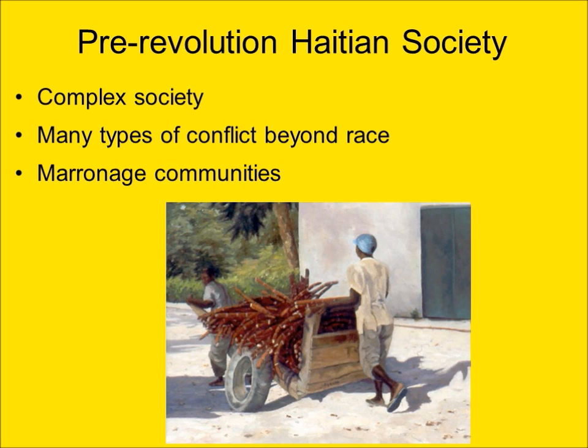There were also significant numbers of mixed-race peoples in Saint-Domingue, who could be found across a wide range of economic conditions. Finally, there were a number of what were known as marronage communities — groups of runaway slaves who had formed their own communities in isolated rural regions. The word is derived from a Spanish term, cimarron, which originally had connotations of a wild horse and began to be used to describe runaway slaves — reflecting the idea of slaves being treated as something less than human, more like property.